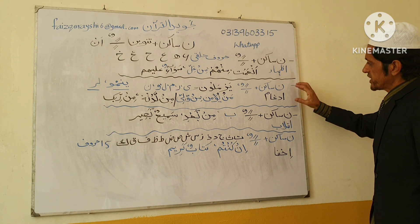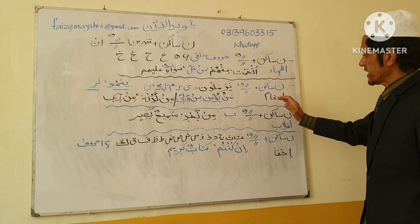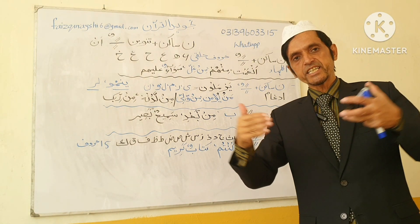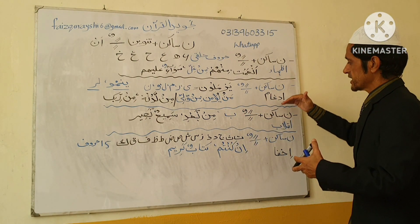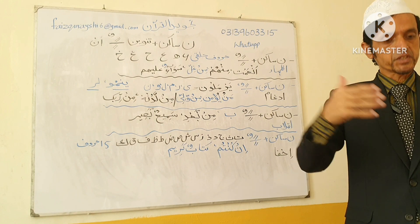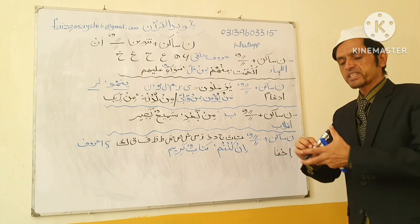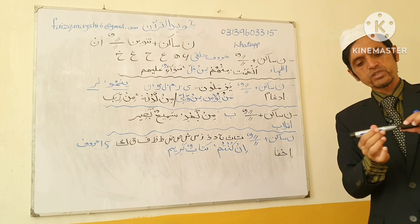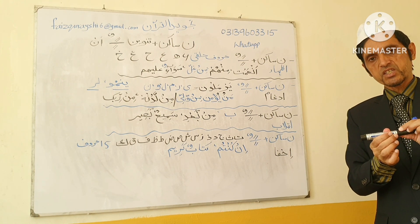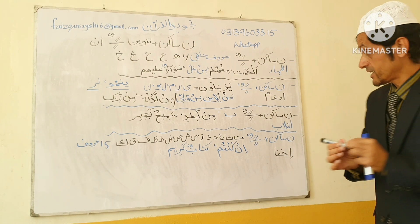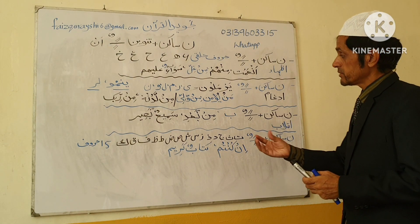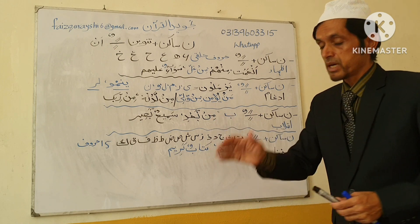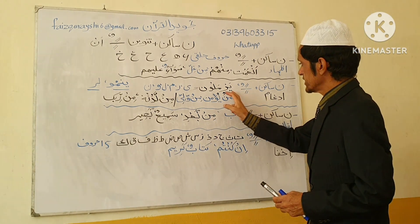Now Noon Saakin plus Tanween — Idgham. Idgham means to enter one thing into another. Whenever these six letters come after Noon Saakin — the acronym is Yarmaloon: Ya, Ra, Meem, Lam, Wao, Noon — we make Idgham. We enter Noon into the coming letter.